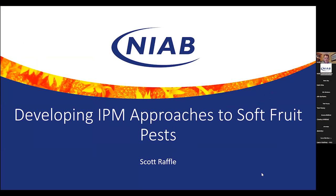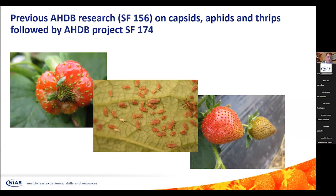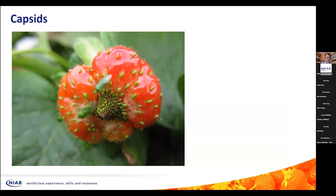The next presentation brings you up to date as a reminder of previous AHDB-funded work on projects SF174 and SF156. This project looked at novel approaches to capsid, aphid and thrips control — pests which were particularly difficult to control using biological mechanisms. We succeeded in taking things a lot further and developed a number of results that we wanted to share.